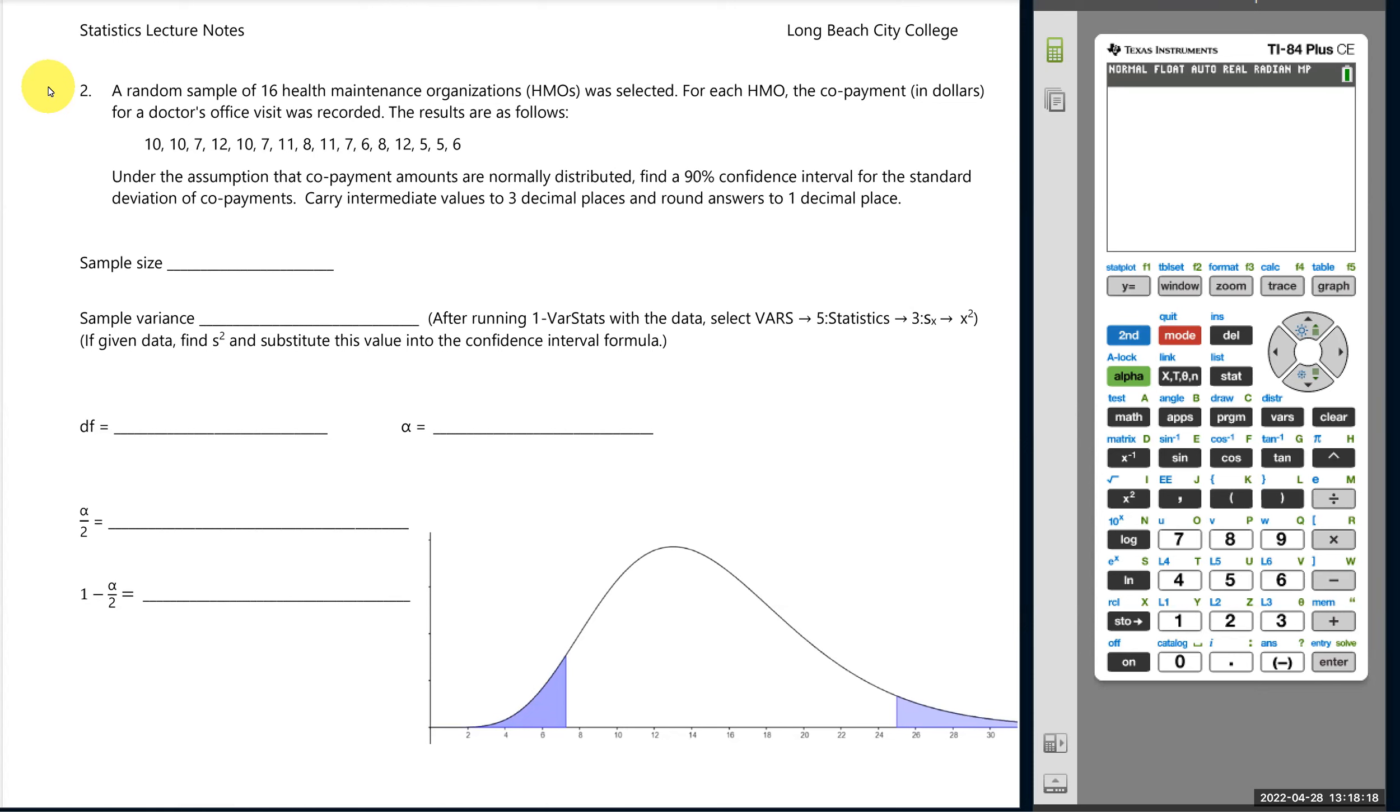We'll take a look at estimating a population standard deviation where data is provided. This is the data we used previously about estimating a doctor office visit copay on average for HMOs. Prior, we had estimated the mean copay, and now we're interested in how much copays vary across different HMOs. A random sample of 16 HMOs was selected, and for each HMO, the copayment in dollars for a doctor's office visit was reported. Under the assumption that copayment amounts are normally distributed, we'll be looking for a 90% confidence interval for the variation as defined by its standard deviation.